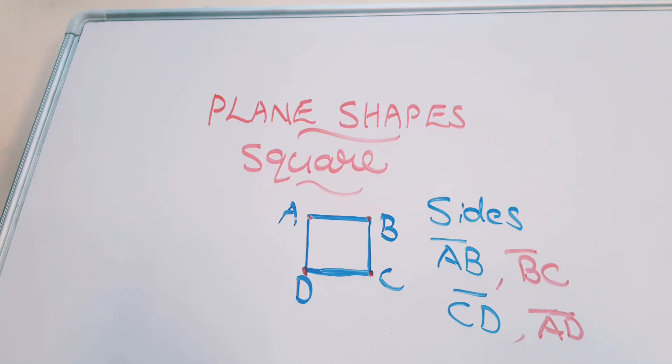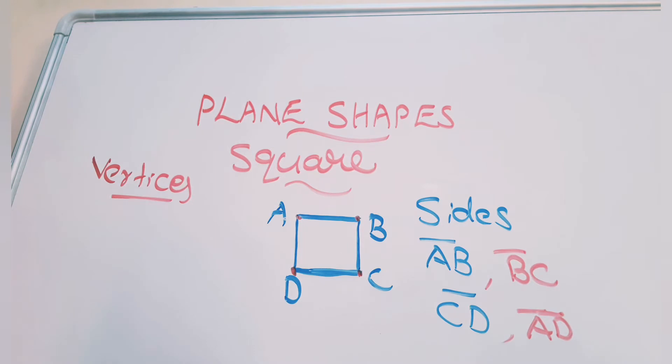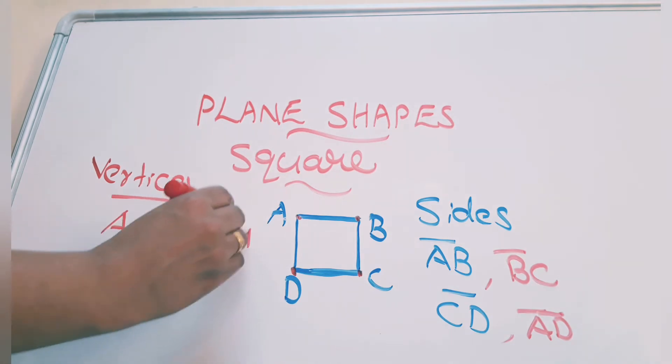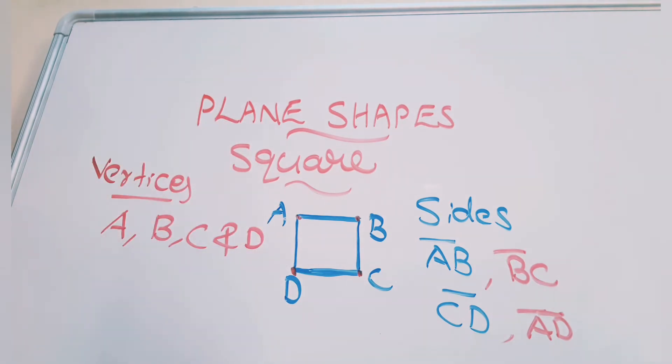So corners or plural form is vertices. Vertices. Vertices are A, B, C and D. Four vertices.